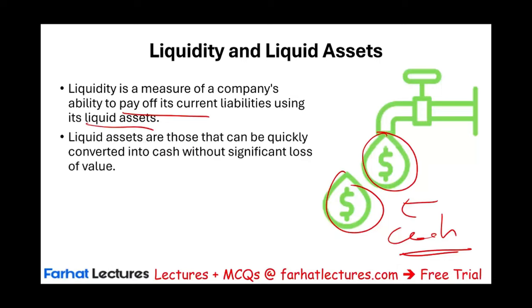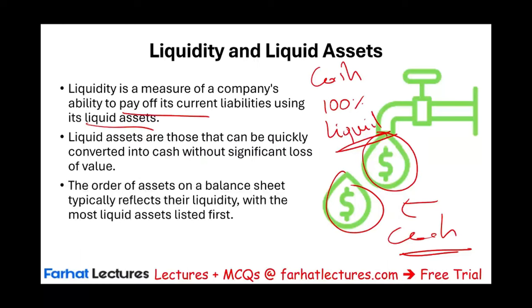Liquid assets are those that can be quickly converted into cash without any significant loss of value. Cash is 100% liquid — cash is cash, you can take it today and pay off your debt. The order of assets on the balance sheet reflects their liquidity, with the most liquid listed first. That's why cash is listed first on the U.S. balance sheet. Under IFRS, it's the opposite — they list the most liquid at the bottom.